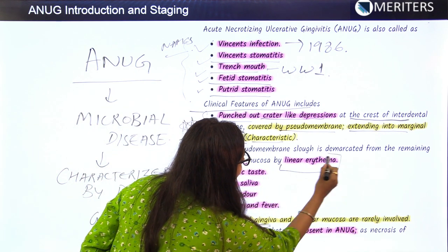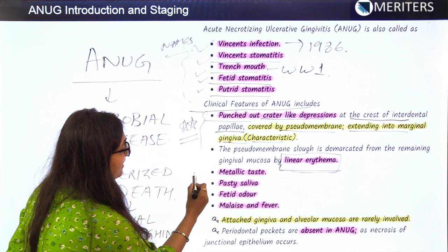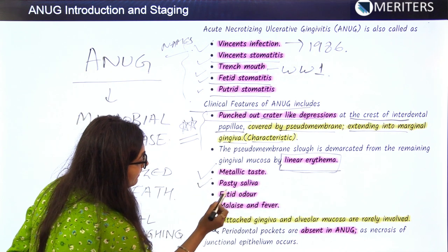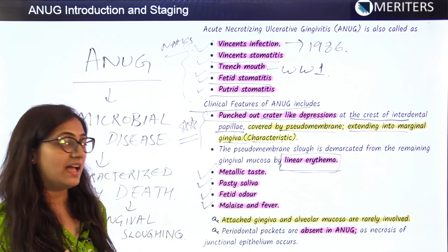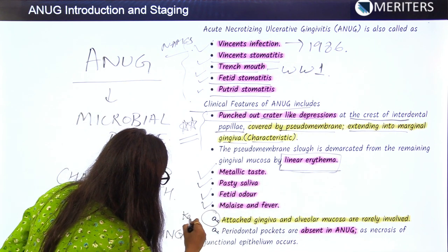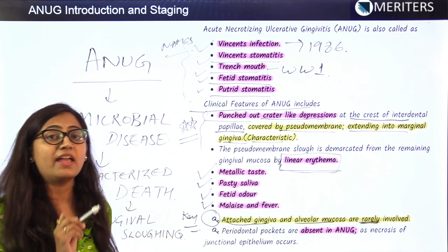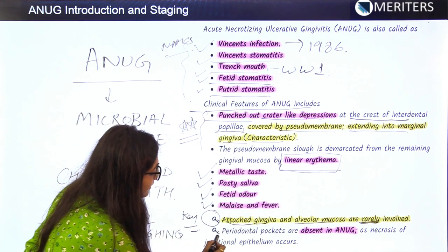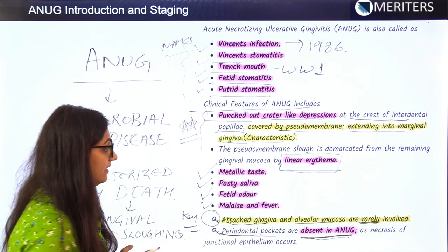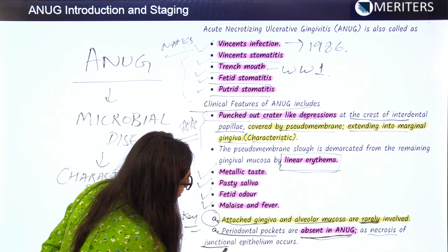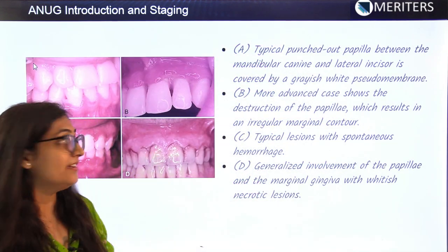The pseudomembrane slough is demarcated from the remaining gingival mucosa by a term called linear erythema. ANAG also presents with metallic taste, pasty saliva, fetid odor, malaise, and fever. Key points: attached gingiva and alveolar mucosa are rarely involved, and periodontal pockets are absent in ANAG, because necrosis of the junctional epithelium occurs.